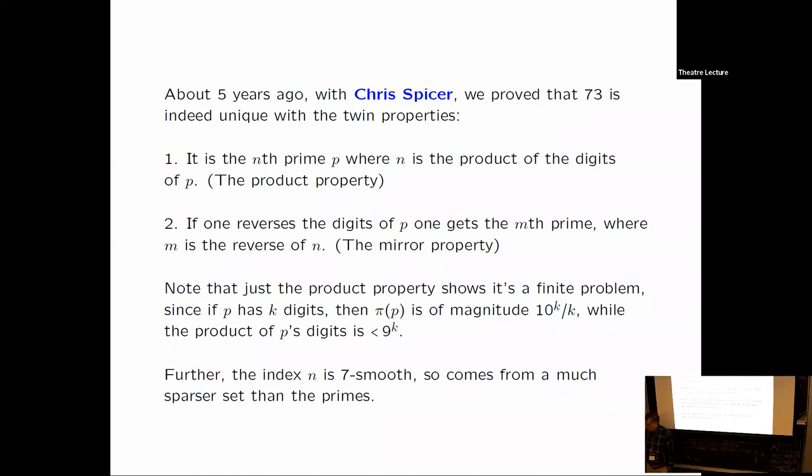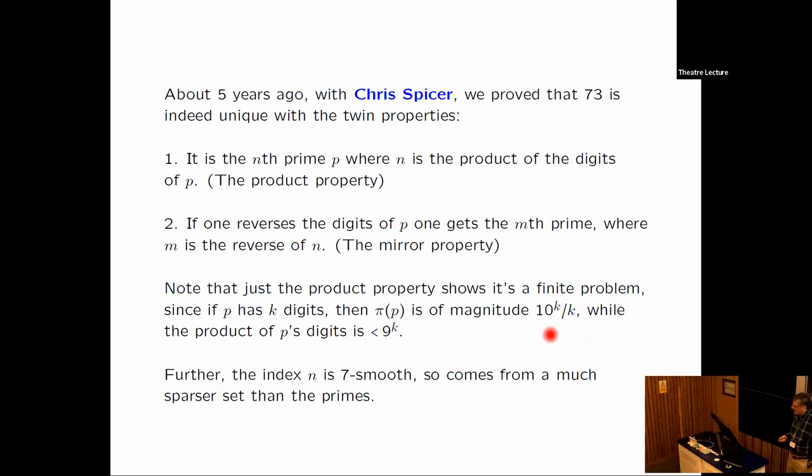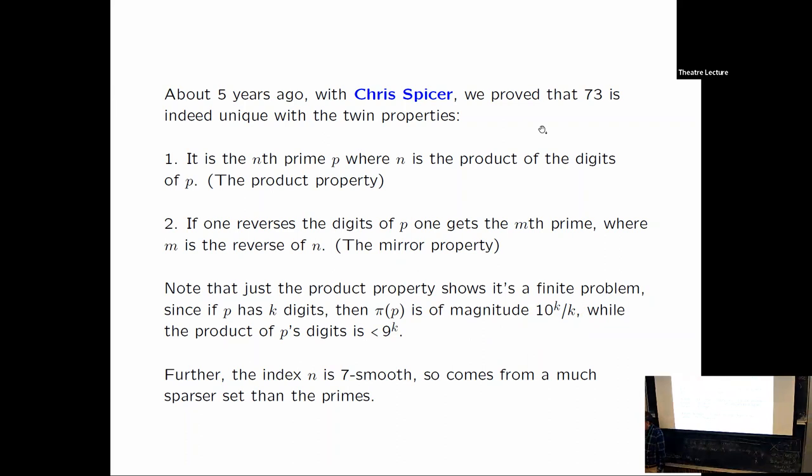Note that just the very first property shows that it's a finite problem. There are not infinitely many candidates. And why is that? Well, suppose our prime p has k digits. That means that the index of p in the set of primes, in other words the number of primes up to and including p, by the prime number theorem it's p over log p. Well p is near 10 to the k. So this number of primes is about 10 to the k over k. What about the product of p's digits? There are k of them. So the product of p's digits is smaller than 9 to the k.